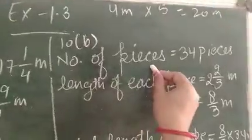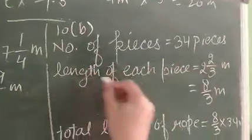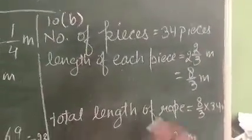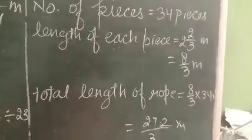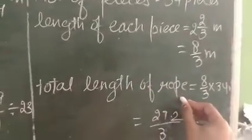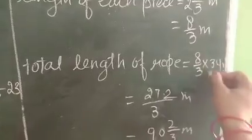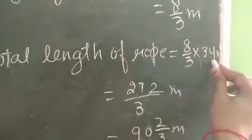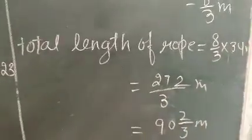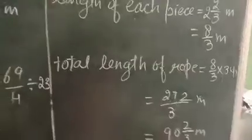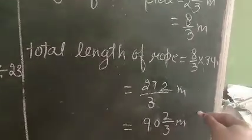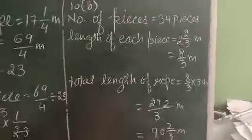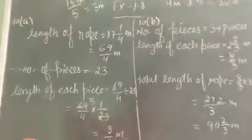For question 10B: number of pieces is 34, and length of each piece is 2 and 2/3 meters, which equals 8/3 meters. Total length of rope equals length of one piece multiplied by number of pieces. Multiplying 8/3 by 34 gives 272/3 meters. Converting to a mixed number, this is 90 and 2/3 meters. So the total length of the rope is 90 and 2/3 meters.